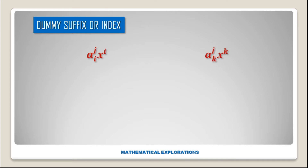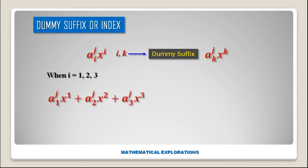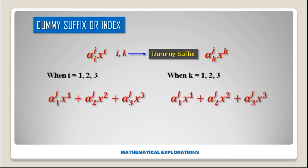Let us consider aₖᵤxᵏ. Here k is the dummy suffix. In the term aᵢⱼxⁱ, i is the dummy suffix, and in aₖᵤxᵏ, k is the dummy suffix. When i equals 1, 2, 3 we get a₁ᵤx₁ + a₂ᵤx₂ + a₃ᵤx₃. Both expressions are the same, confirming that we can replace a dummy suffix with any other suffix, provided that suffix is not occurring in that term. Here i is replaced by k.